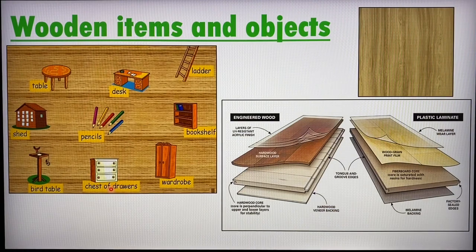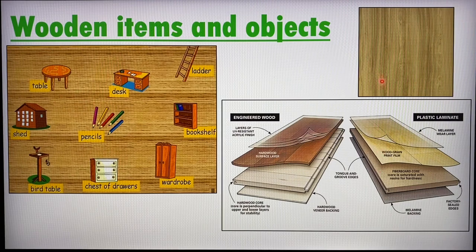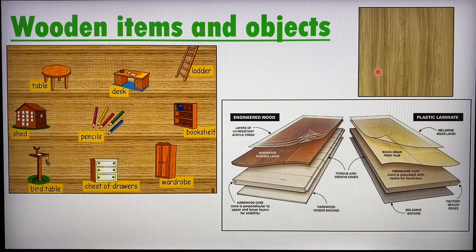Next we move on to wood. Some very common items or furniture made of wood include tables, desks, pencils, bookshelves, drawers, and so on. I'd like to bring your attention to this piece of laminated wood. It's a good example of how items can be made of not just one material — even though they may look like one material, they are made of a few materials.